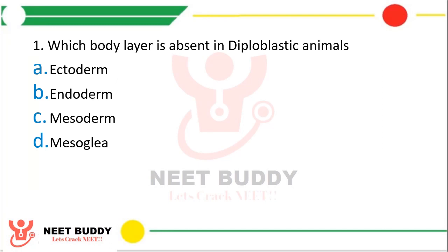The correct answer is option C, that is mesoderm is absent. The outermost layer is the ectoderm, then comes mesoderm, and then comes the endoderm in triploblastic animals. However, in diploblastic animals, the mesoderm layer is absent, and in place of mesoderm, there is something called mesoglia. So the correct answer is option C, mesoderm.